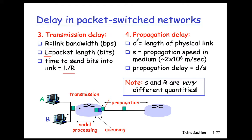The final component is propagation delay. Given the length of the physical link and the propagation speed of signals traveling the physical link, the propagation delay is D divided by S — essentially the time for the packet to traverse the physical link. Be careful: S is the distance the signal can travel per second, while R is the number of bits the transmitter can push out per second. Although I call S the propagation speed and R the link speed sometimes, they are two very different quantities.